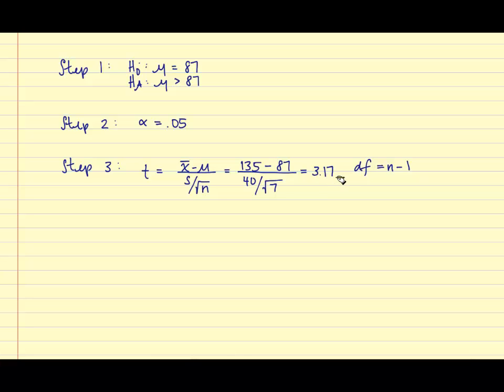Our degrees of freedom is equal to n minus 1. And so, 7 minus 1 is equal to 6.